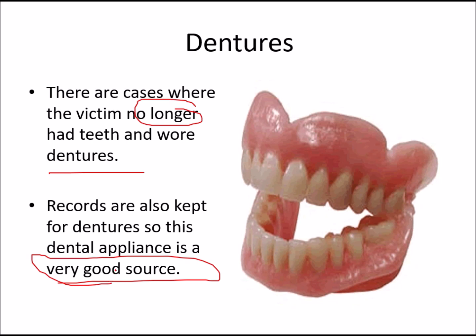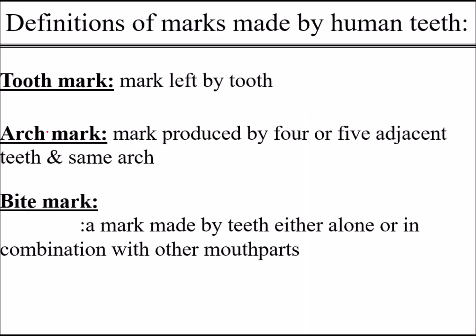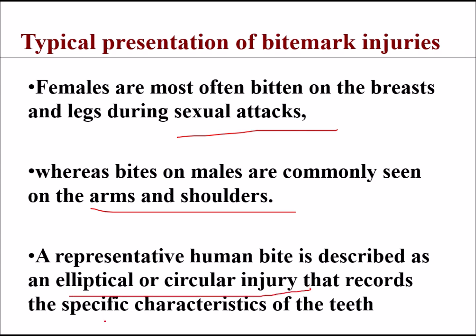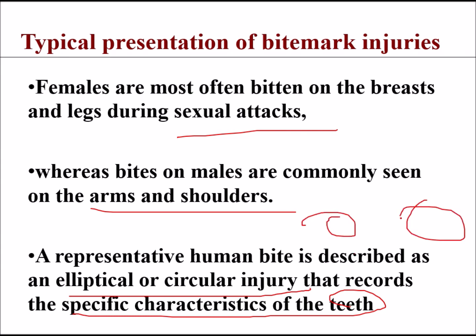Different marks made by human teeth include tooth marks, arch marks, and bite marks — marks made by teeth either alone or in combination with other mouth parts. In females, bite marks are mostly found on the breasts or legs during sexual attacks, while in males bites are commonly seen on arms and shoulders. A representative human bite is described as an elliptical or circular injury that records the specific characteristics of the teeth.